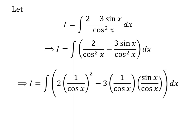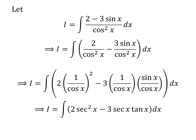The above integrand can be rewritten as I is equal to integral of 2 times square of 1 upon cosine of x minus 3 times 1 upon cosine of x times sine of x upon cosine of x with respect to x. We know secant of x is equal to 1 upon cosine of x and tangent of x is equal to sine of x upon cosine of x.